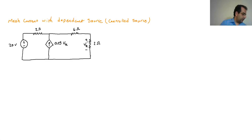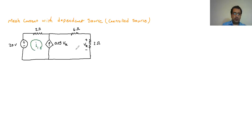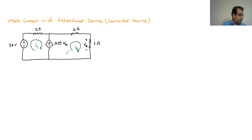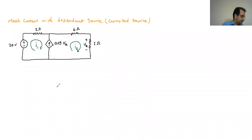The very first step is to assign the current in each of the meshes. We have the left mesh with current I1 and the right mesh with current I2. I assume both currents go clockwise. If I1 or I2 comes out negative, it means the direction I assumed was wrong and it actually rotates in the opposite direction.